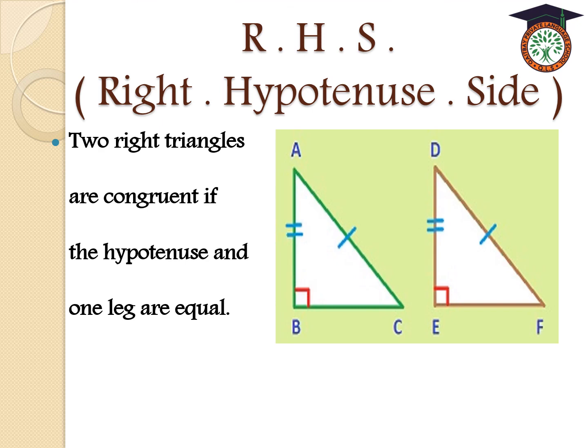Both triangles have right angles — angle B and its corresponding angle E are right angles. The hypotenuse and one leg are equal, and the right angle is the third element. Therefore triangle ABC is congruent to triangle DEF.